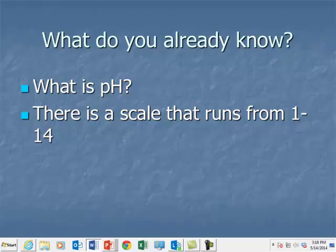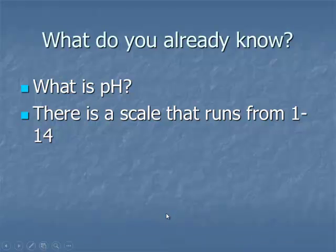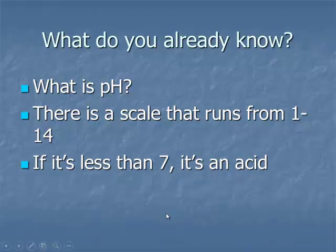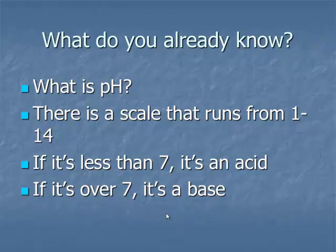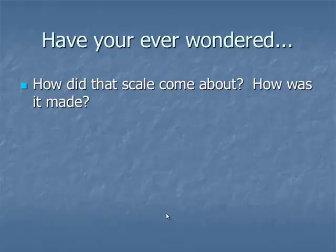Before we get into the content, you may already know a lot about acids and bases and pH. Let's see what you remember. What is pH? Do you know there's a scale that runs from 1 to 14? pH is a measure of how strong an acid or a base is. If it's less than 7, we call it an acid, and if it's greater than 7, it's a base. Have you ever wondered where that scale came from or how it was made?